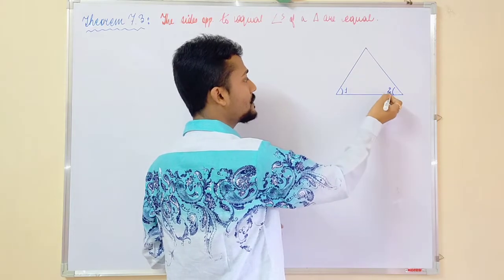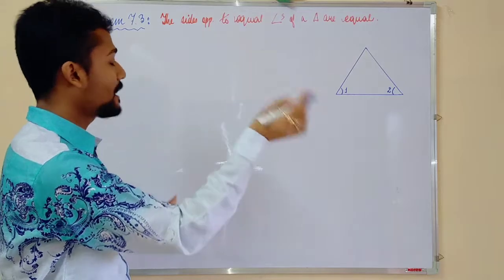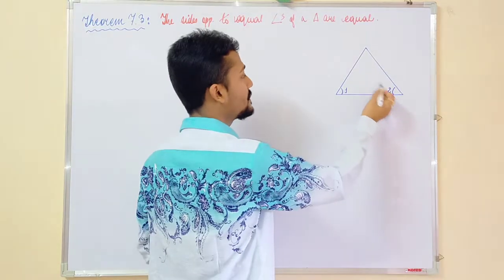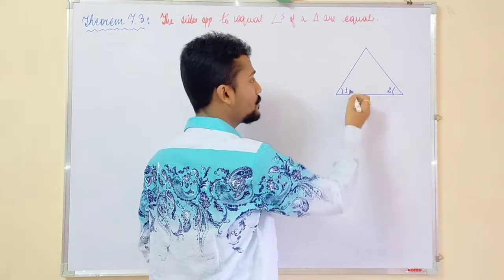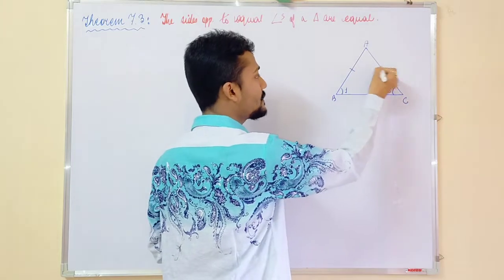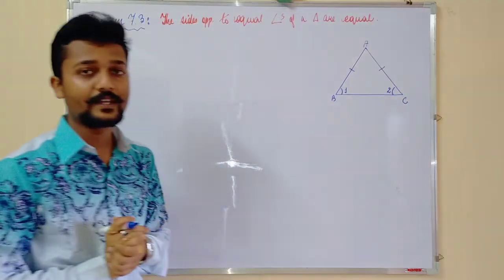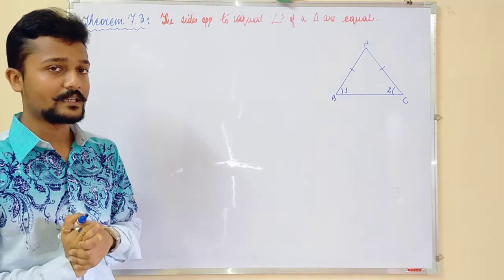That means sides opposite to equal angles. This particular side which is opposite to the equal angles, that means 1 and 2. This particular side, A, B, C, if it is a triangle, then this particular side and this particular side, we have to prove that they are equal provided angle B and angle C are equal.